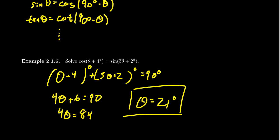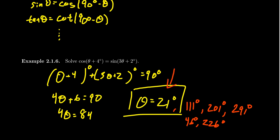So 21 degrees is a solution to this equation. However, 21 is not the only solution. Considering the period of sine and cosine, you also get 111 degrees, 201 degrees, and 291 degrees. And using reference angle arguments — since sine has the same value in the first and second quadrants — there are also solutions of 46 and 226 degrees. The main idea is that the cofunction theorem gives you 21 degrees, and using other techniques we can derive the remaining solutions between 0 and 360 degrees.